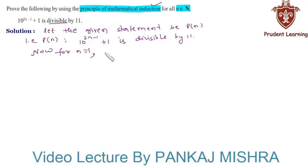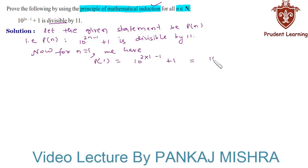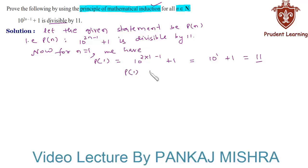For n equal to 1, we have P(1) equal to 10 to the power of (2 × 1 − 1) plus 1, which equals 10 to the power of 1 plus 1, which is equal to 11. Since 11 is divisible by 11, the given statement is true for n equal to 1, so P(1) is true.